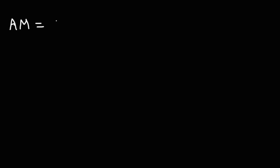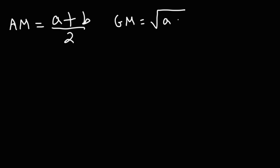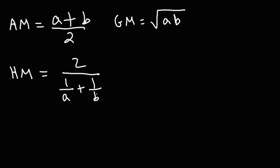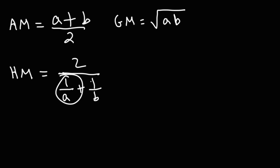If you want to find the arithmetic mean of two numbers, it's simply the sum of those two numbers divided by 2. The geometric mean of two numbers is the square root of the product of those two numbers — the square root of a times b. The harmonic mean is 2 divided by the sum of the reciprocals of a and b — it's like the reciprocal of the arithmetic mean formula but using reciprocals of the data points.